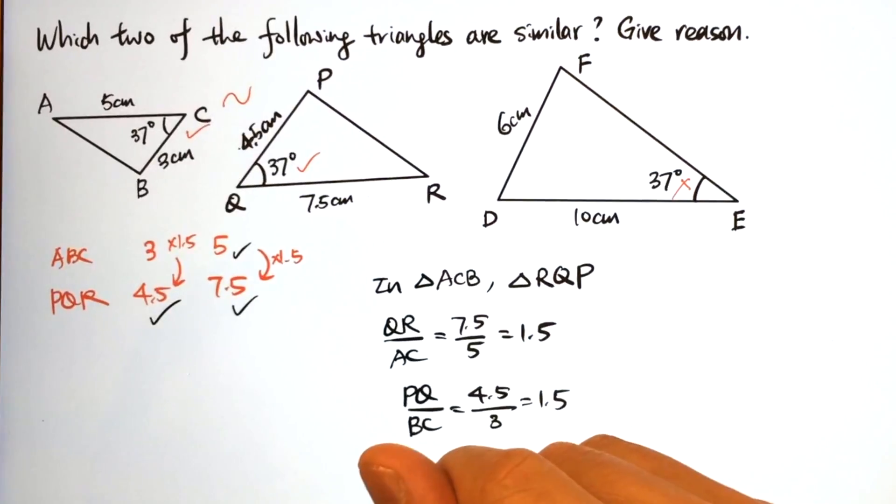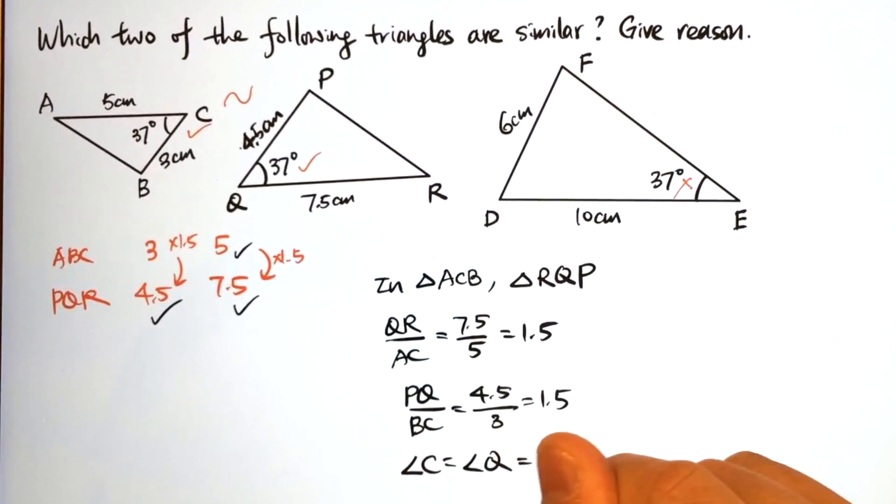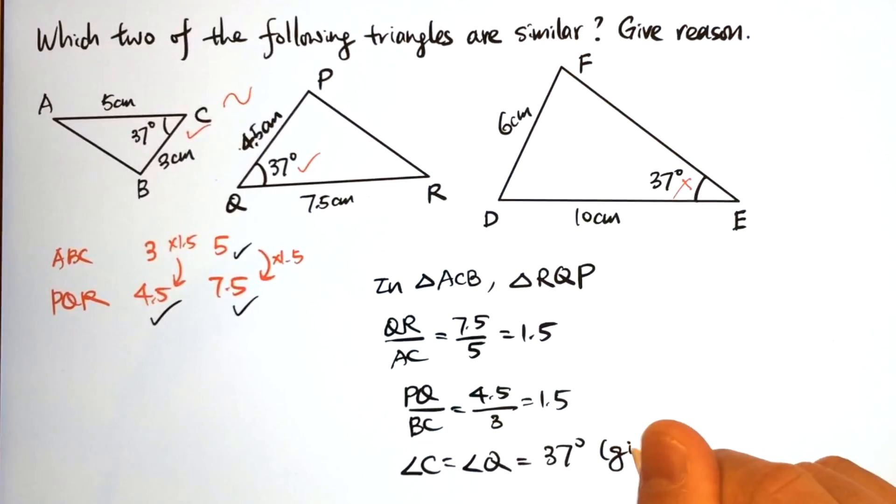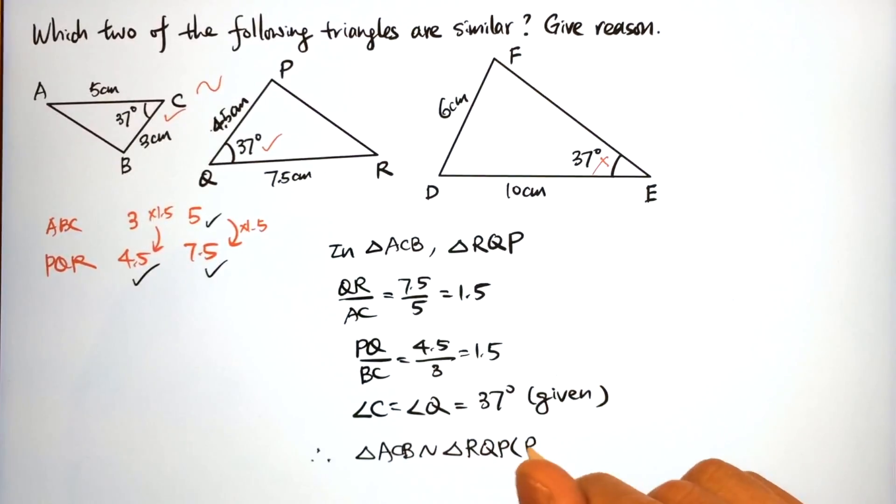Finally, angle C equals angle Q, both 37 degrees, which is given. Therefore, triangle ACB is similar to triangle RQP by the ratio of two sides, included angle.